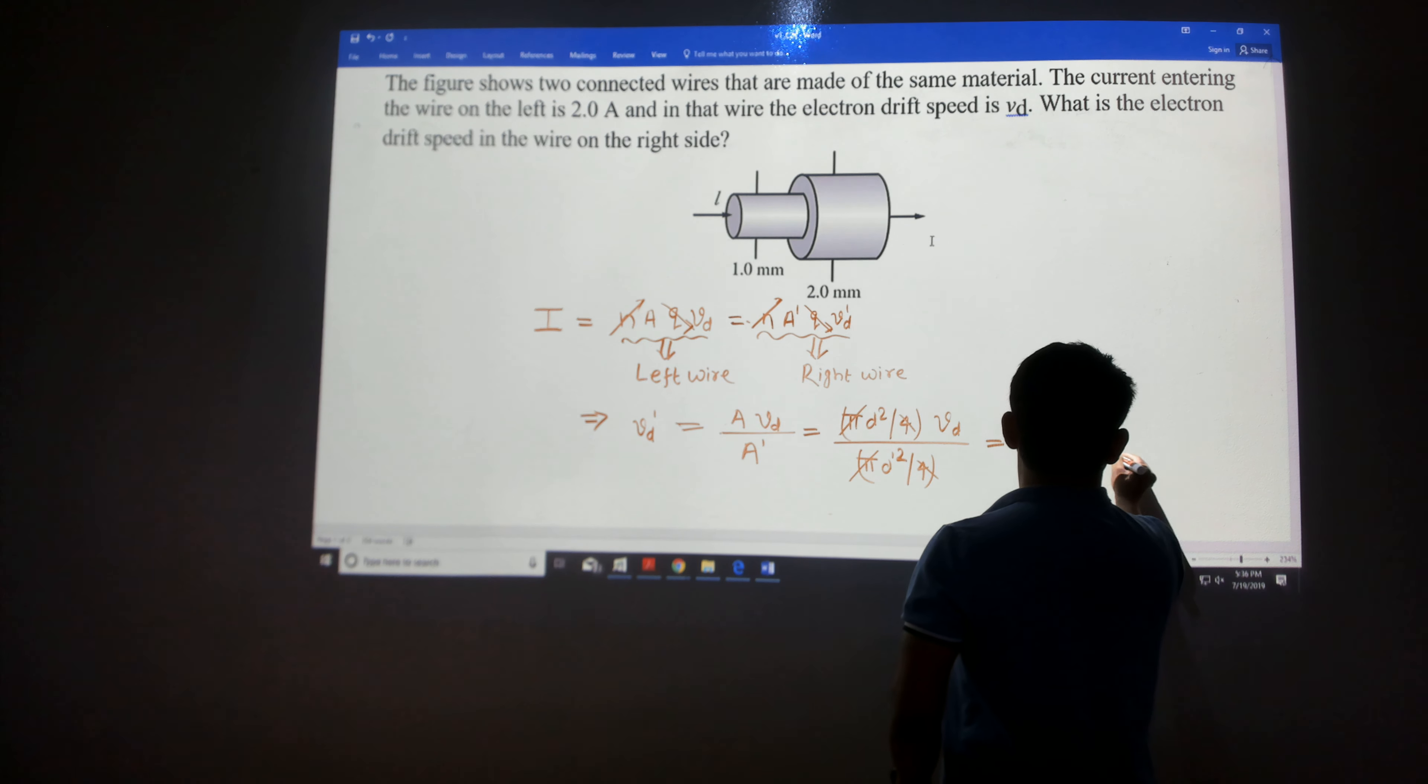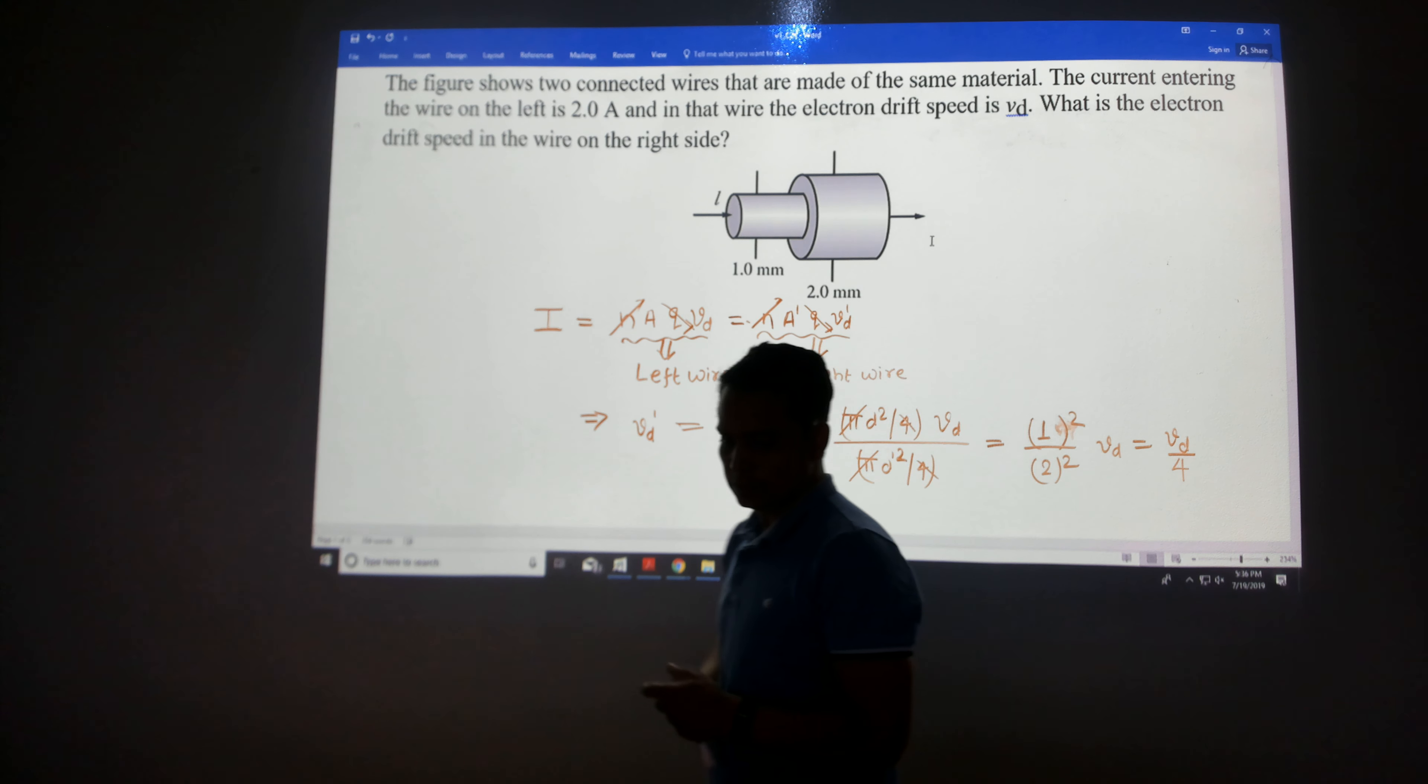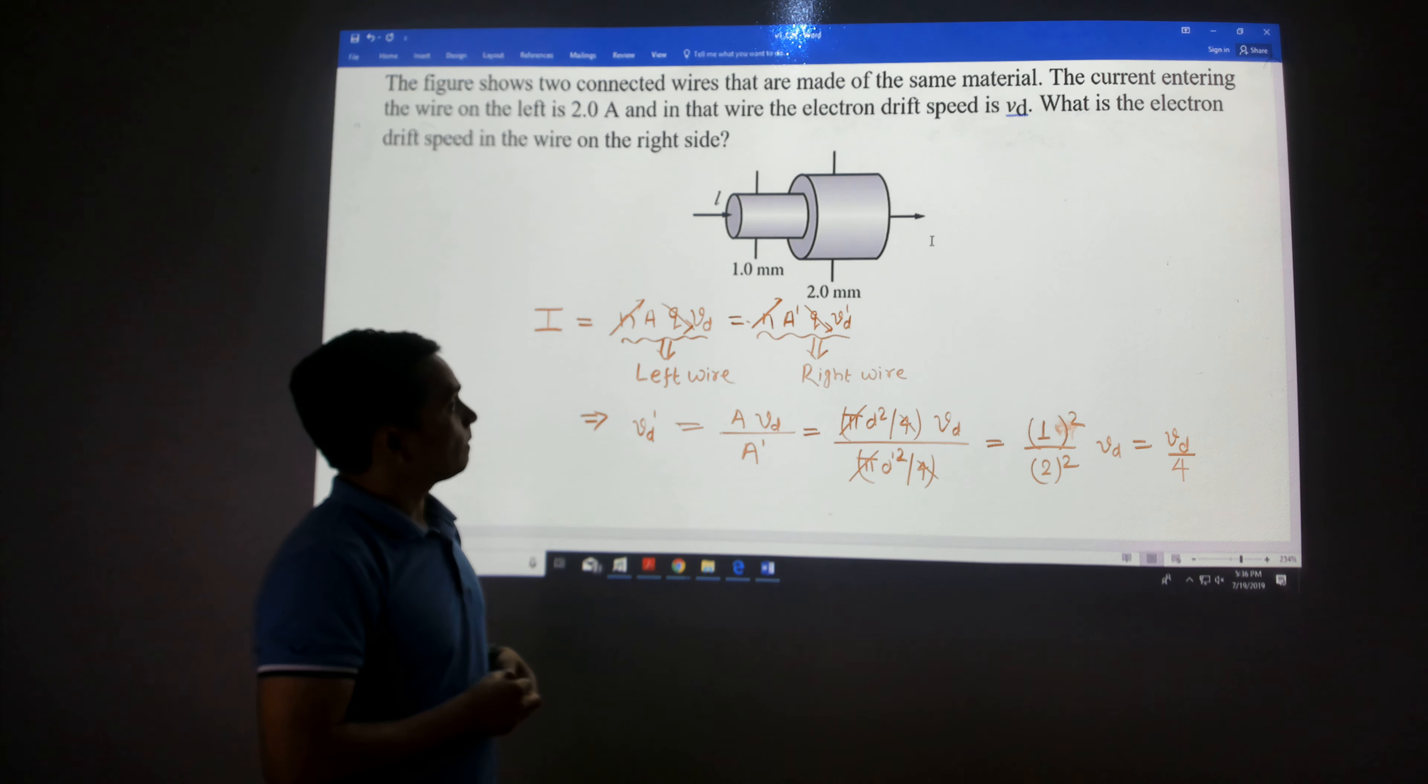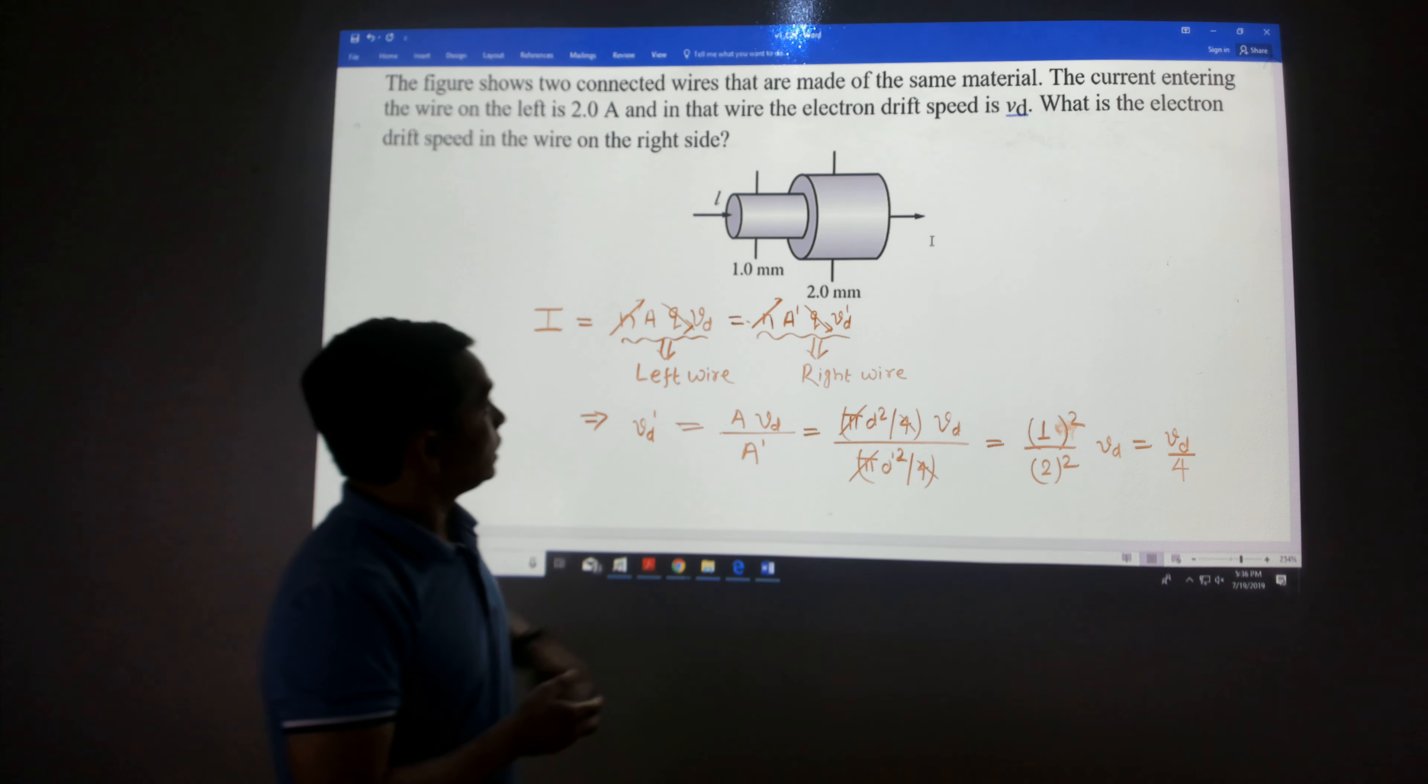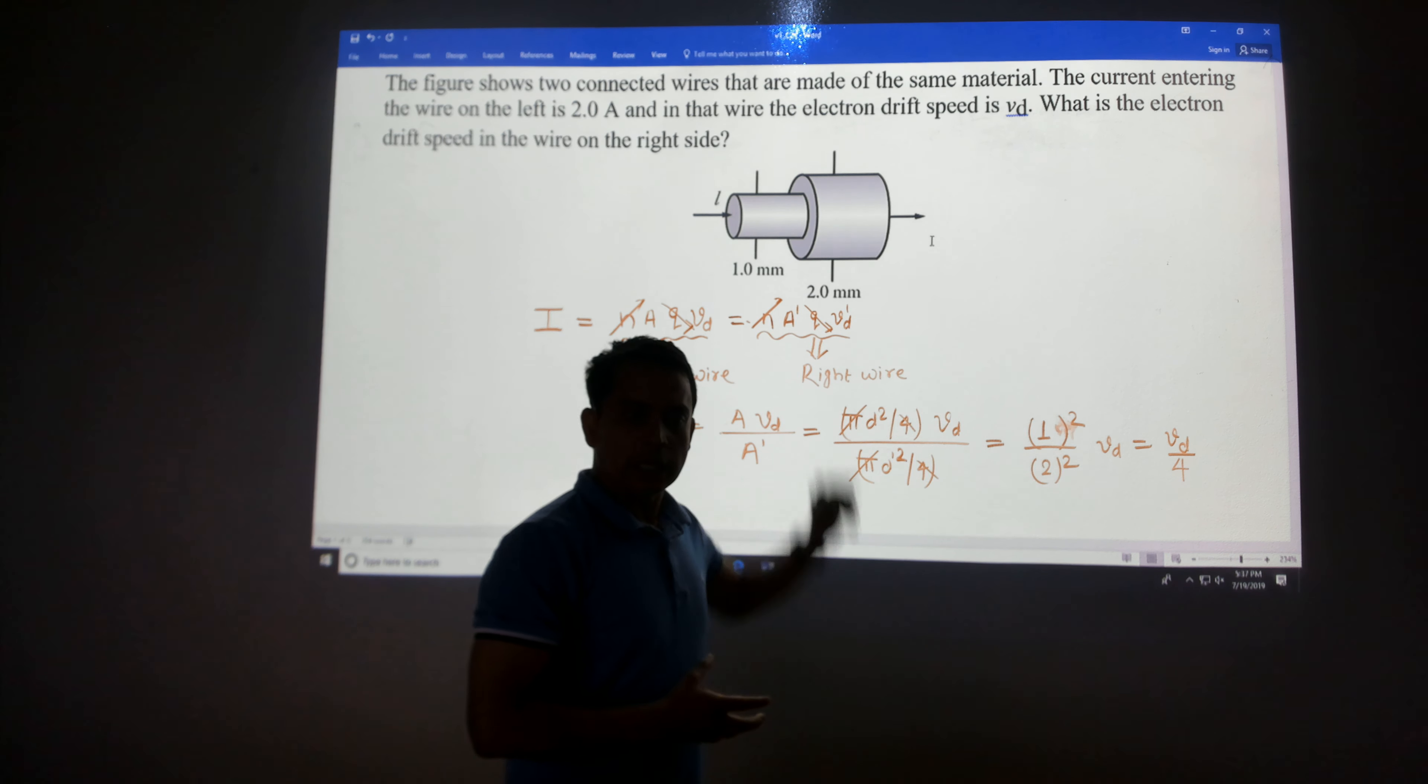And VD, so this would be VD divided by 4. So the drift velocity of the electron in this case would be 4 times smaller.